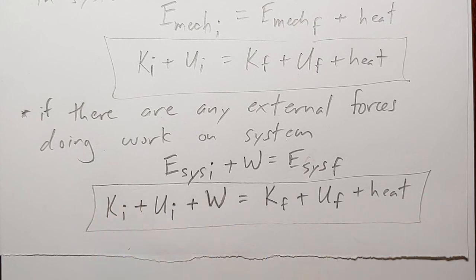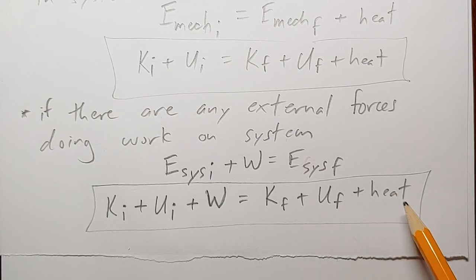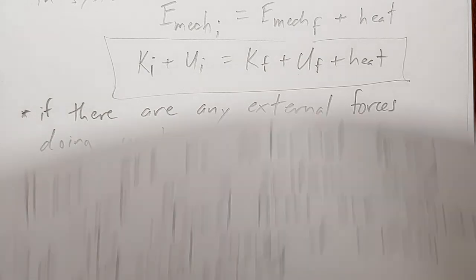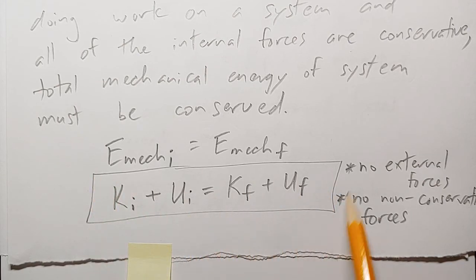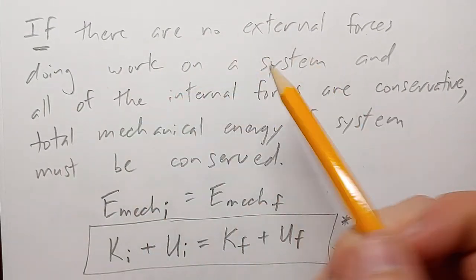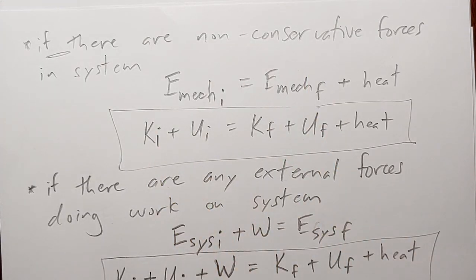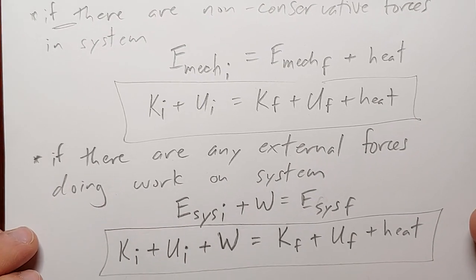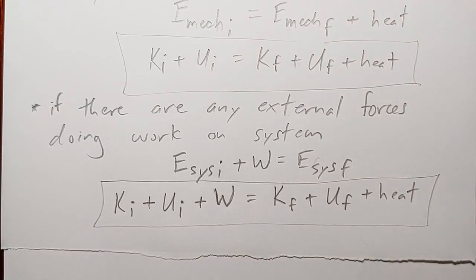This equation is the most generally true, because it accounts for the possibility of a non-conservative force generating some heat — and if there are no non-conservative forces, heat is zero. It also accounts for the possibility of an external force doing work — and if there's no external force, that term goes to zero. But using this whole thing every single time is not helpful; in a lot of our problem-solving situations, we're going to be able to use the simpler form. These equations should make sense intuitively. By the end of the unit, you should be able to figure these equations out on the fly — they're not something you should memorize.